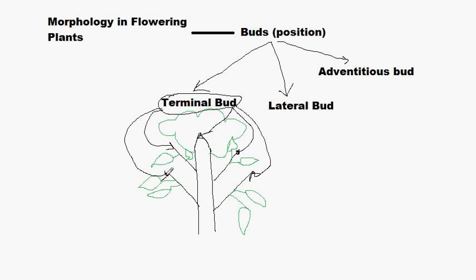This terminal bud actually increases the length of the plant. If this bud grows more and produces more leaves and flowers — if it is a floral bud — then the height of the plant will increase. Similarly, if these lateral branches grow, the plant will grow broader and increase its size. So this terminal bud causes the plant to increase its size.